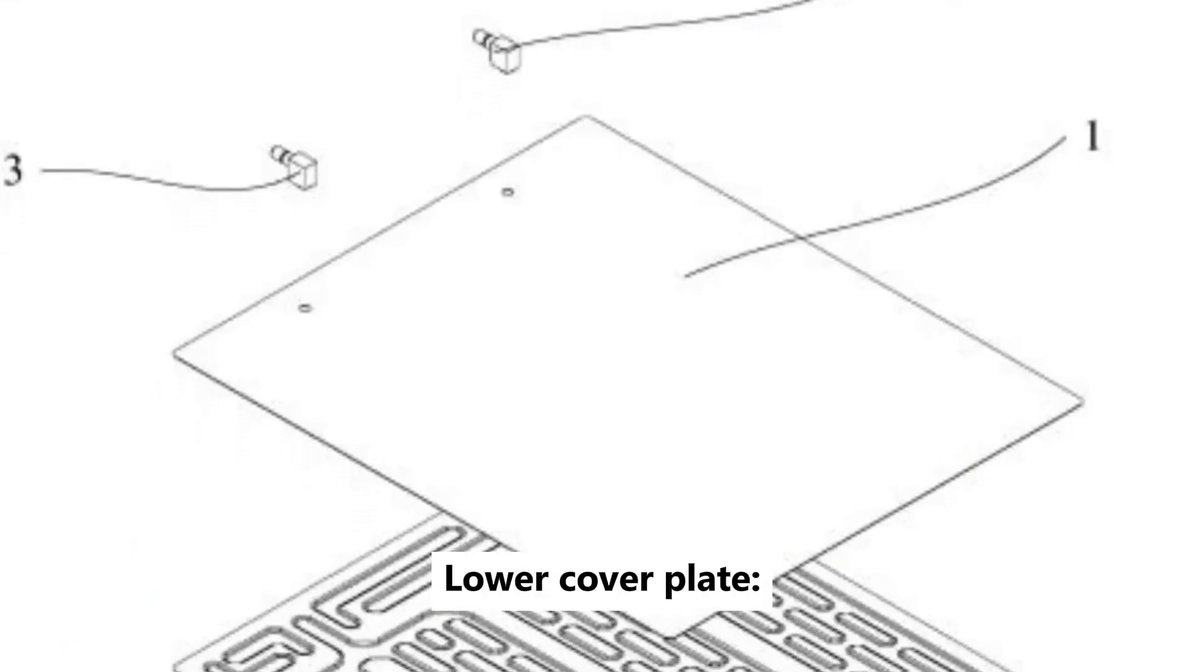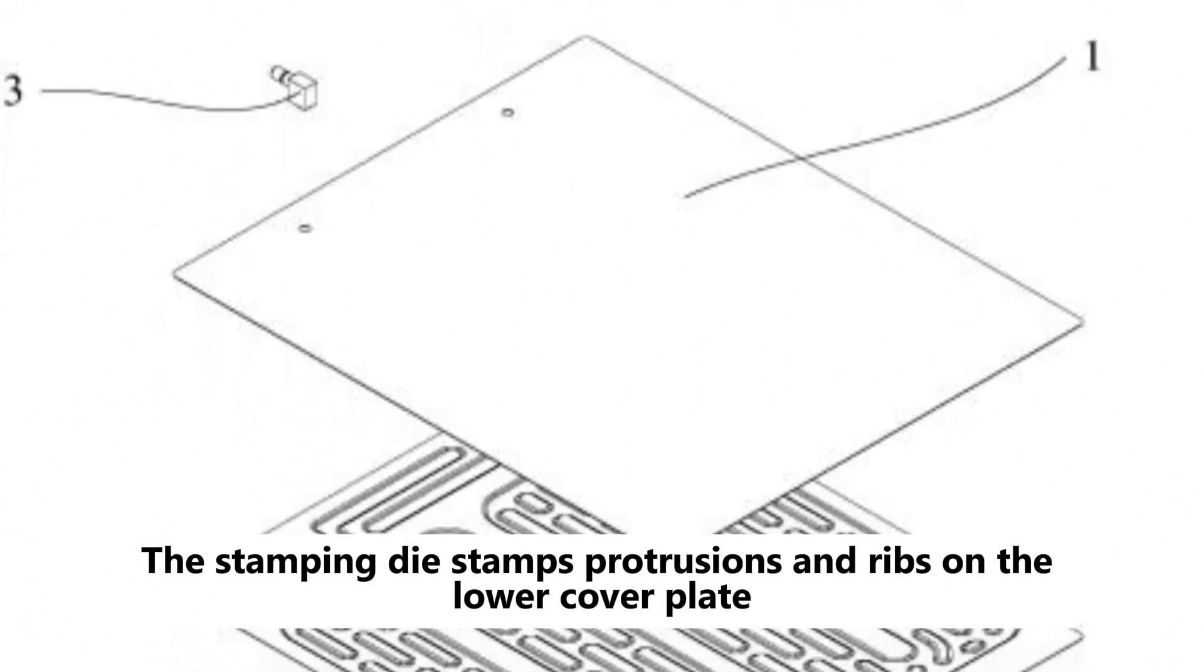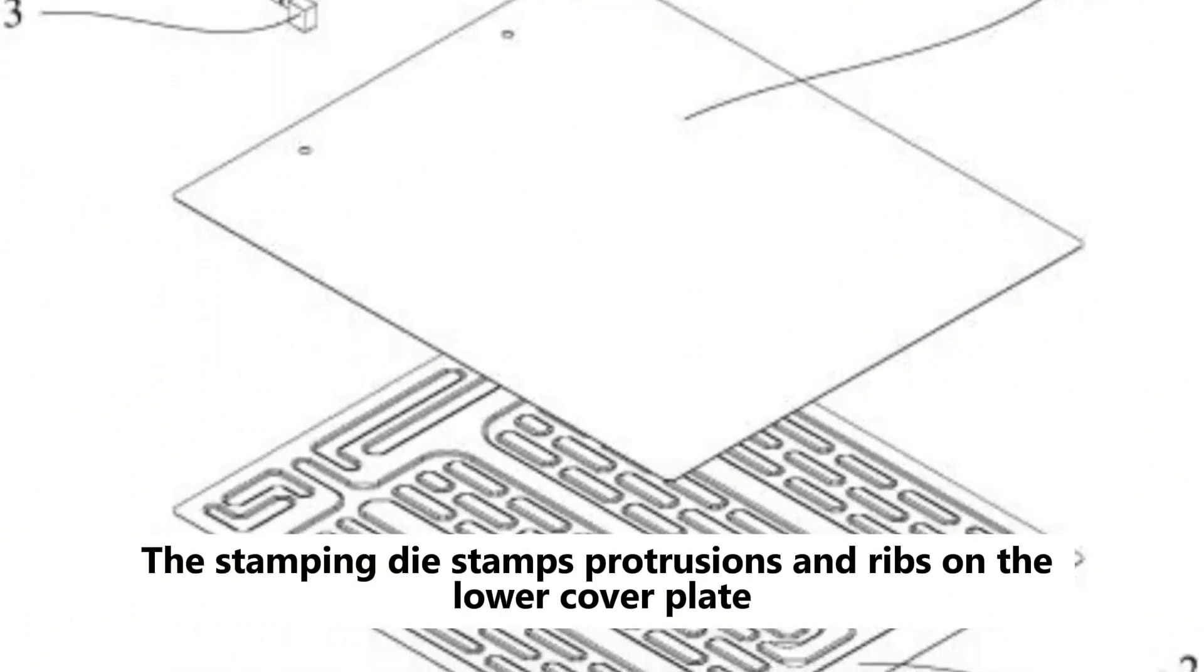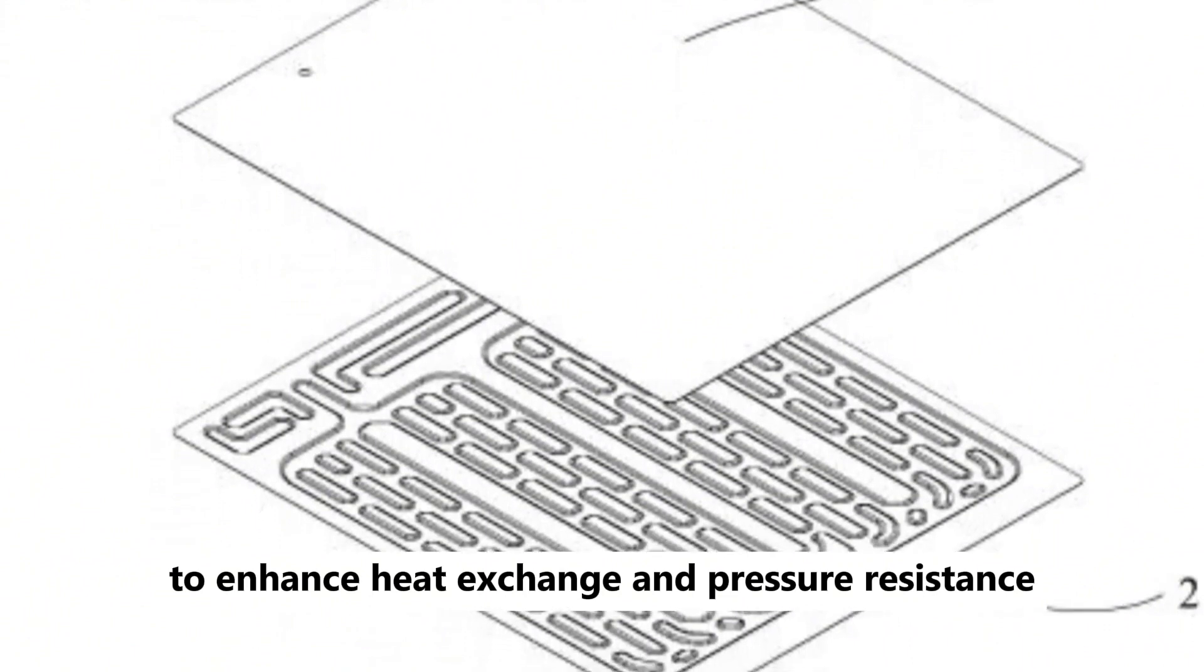3. Lower cover plate. The stamping die stamps protrusions and ribs on the lower cover plate to enhance heat exchange and pressure resistance.